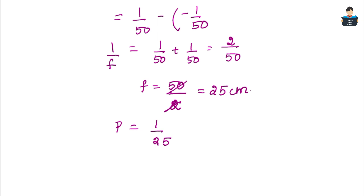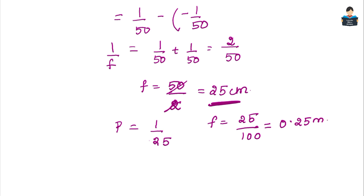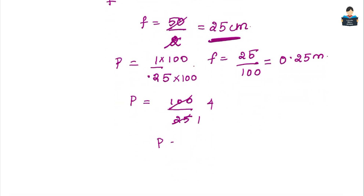To find the power in diopters, we convert focal length to meters: f = 25 cm = 25/100 = 0.25 m. Then P = 1/f = 1/0.25 = 100/25 = 4 D. The power of the lens is positive 4 diopters, confirming it is a convex lens.